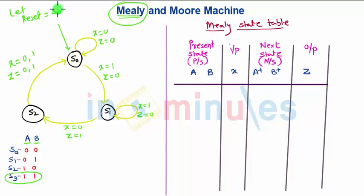So for S0, the present state inputs are A and B. The combination of A and B are 0, 0. So there are two conditions now. For input S0 state 0, 0, input X will be 0 or it will be 1.